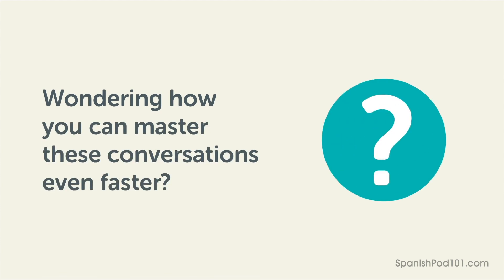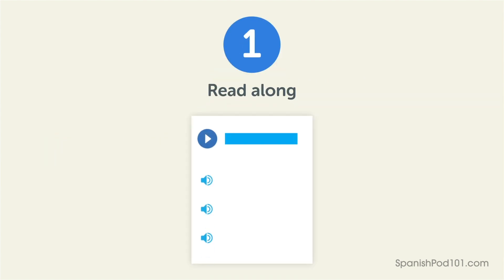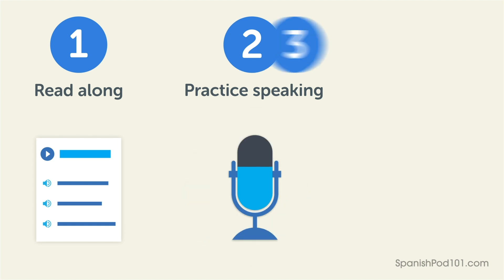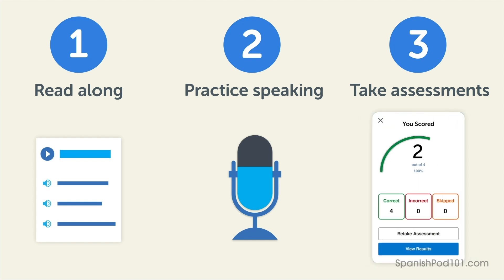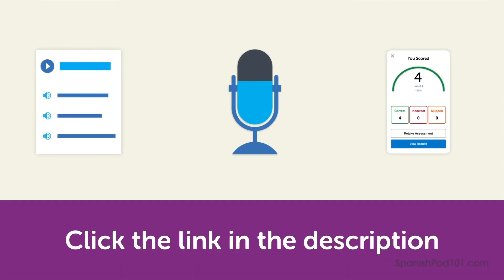Wondering how you can master these conversations even faster? Here's how. 1. Read along — you get the lesson, conversation, and translations inside our dialogue tool, so that you see each word as you hear it and understand it all. 2. Practice speaking — by shadowing what you hear, you can also record and compare yourself with native speakers using our voice recording tools. And 3. Take our assessment tests and see how much you remember. These tools are part of our CanDo course. Just click the link in the description to get them.